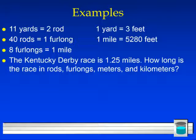So, examples. Information I'm going to give you to problem solve here. These are your statements of equality that you are going to turn into conversion factors. The Kentucky Derby race is 1.25 miles. How long is the race in rods, furlongs, meters, and kilometers? So I'm asking you to convert something into four different units. Go ahead and take a moment. You can pause the PowerPoint and try to do your calculations using conversion factors to generate those four different numbers. Press pause now.